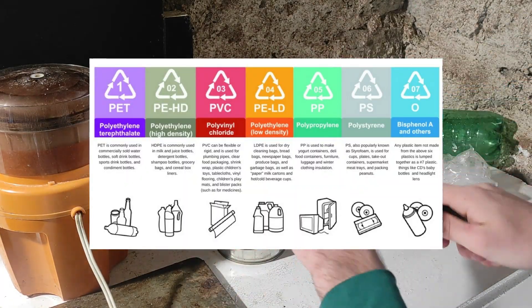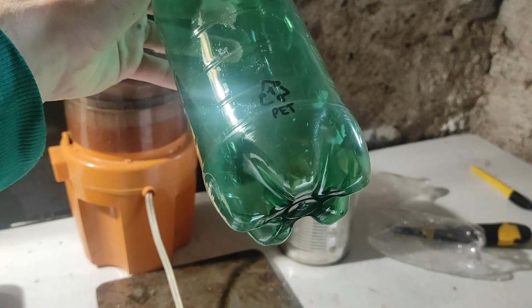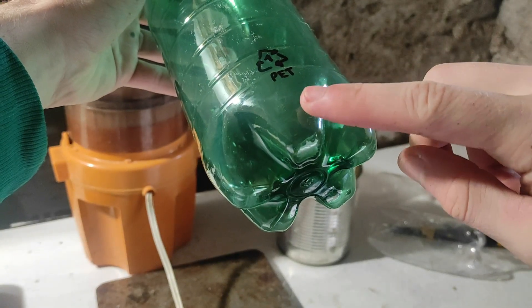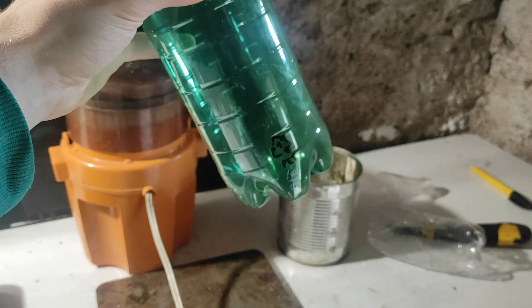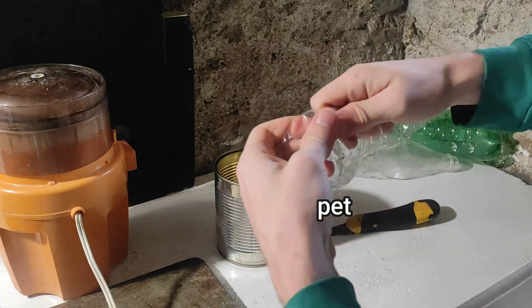you can see that the PET, the plastic you want, is labeled with the number 1 in the weird triangle, just like on this bottle. If you can't find the label, don't worry, because almost all plastic bottles of this type are made out of PET.